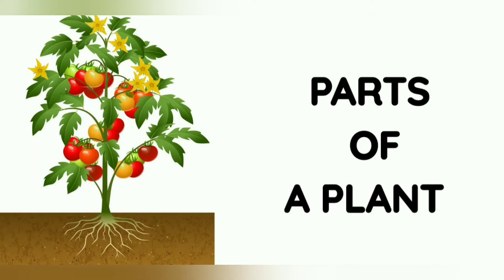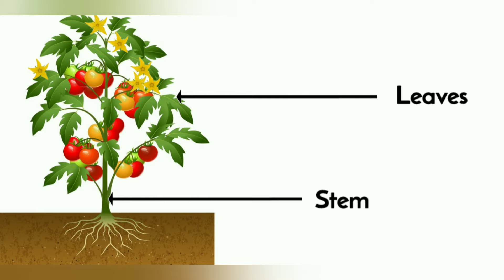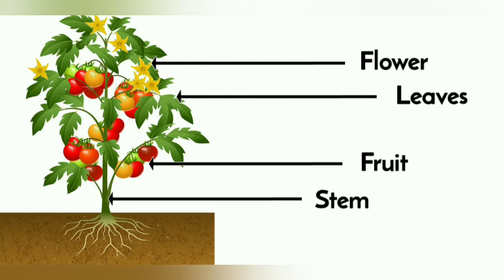Now we will learn about the parts of a plant. There are mainly five parts: Leaves, Stem, Flower, Fruit, and Roots.